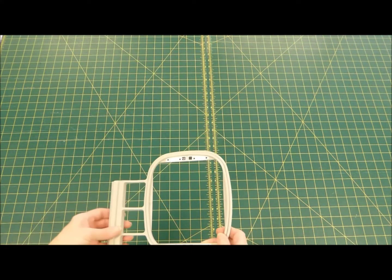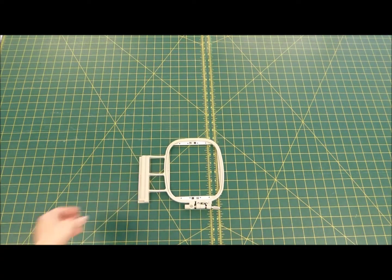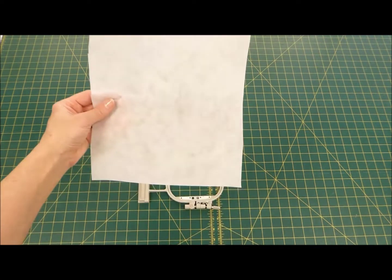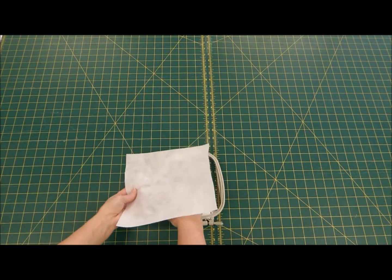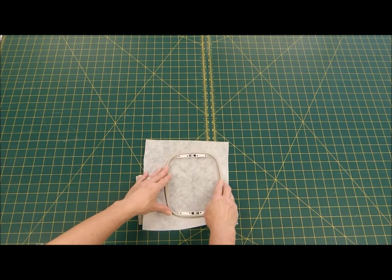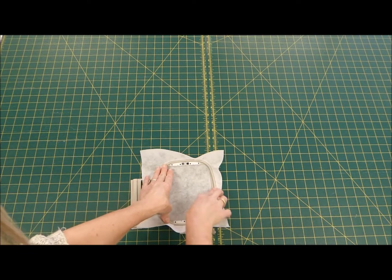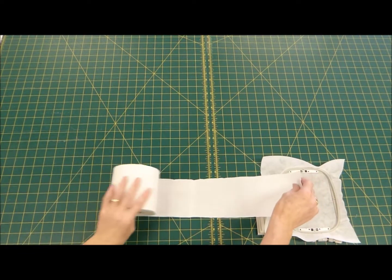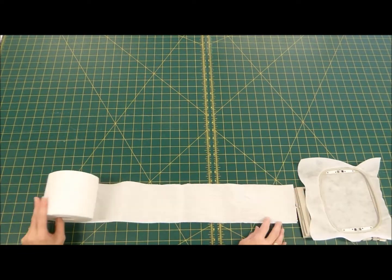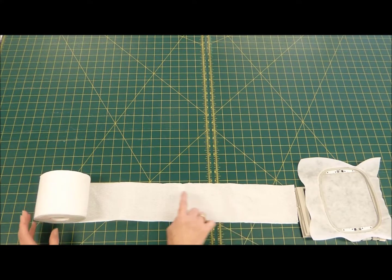For our next step, we get our 10cm by 10cm hoop. We cut a square of cutaway and place that into the hoop. Now with our roll of toilet paper, we'll count four squares in: 1, 2, 3, 4.